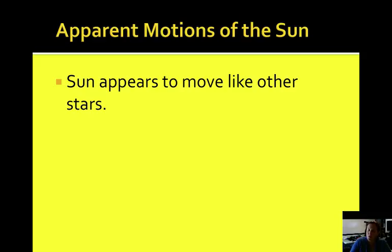We talked about star motions in our prior lesson. We know that stars appear to rise in the east and set in the west. The same thing happens with the sun. The sun has apparent motion, since it's really the Earth that's rotating that makes it appear to make that arc in the sky.